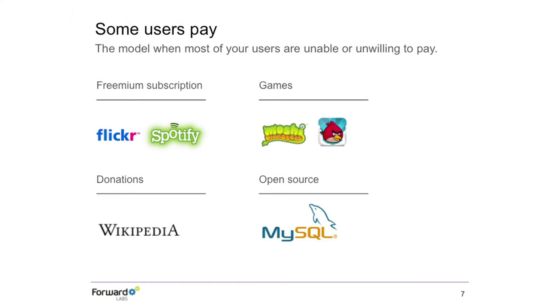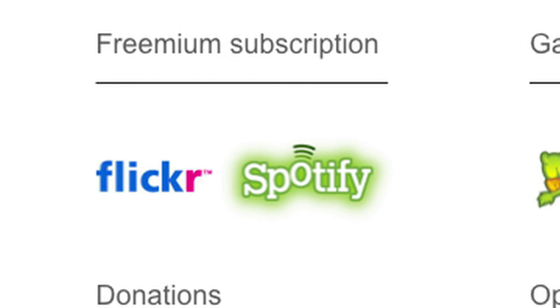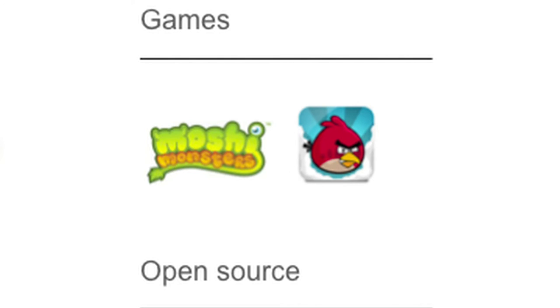The second type of model is: some users have to pay. For example, you can have freemium subscriptions like Flickr or Spotify. I have a Flickr account and I've never paid for it. There are tens of millions of users who have free Spotify accounts and have never paid, and some users opt in to pay a subscription because they derive additional benefits. Another good example are games — Moshi Monsters or Angry Birds. I've downloaded them and played them for free and never paid a dime, but other users choose to go for the paid version or purchase merchandise.